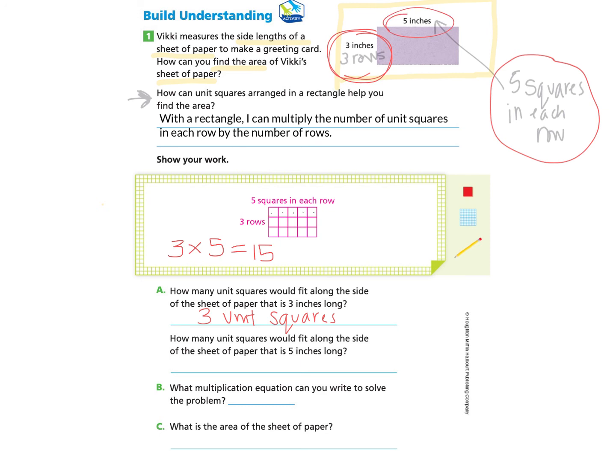We can count that again here: 1, 2, 3, 4, 5. And we know that is 5 unit squares. Notice that we're not just writing the number, but we're actually writing the unit squares next to it.